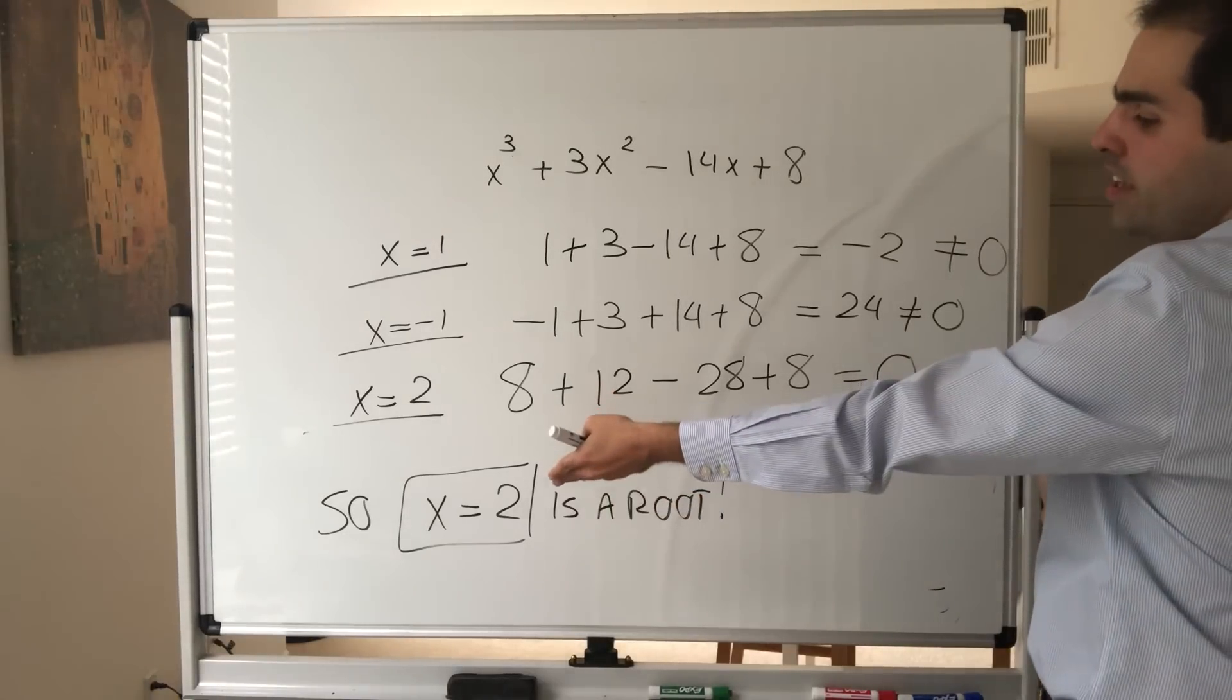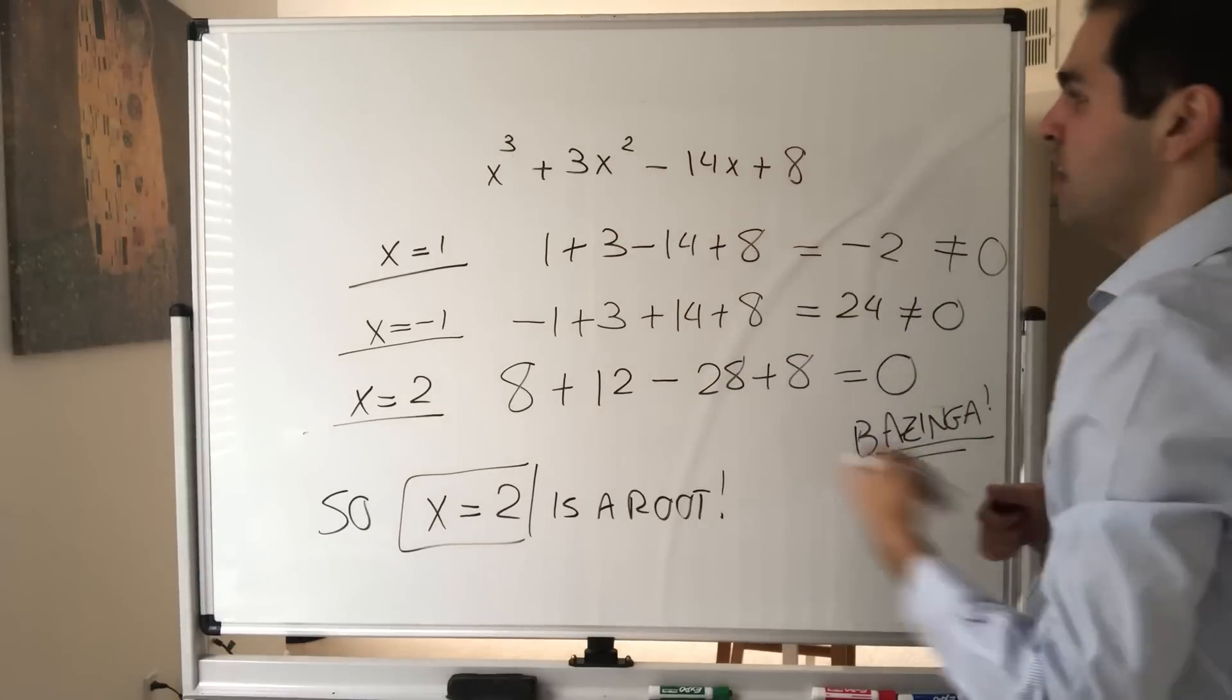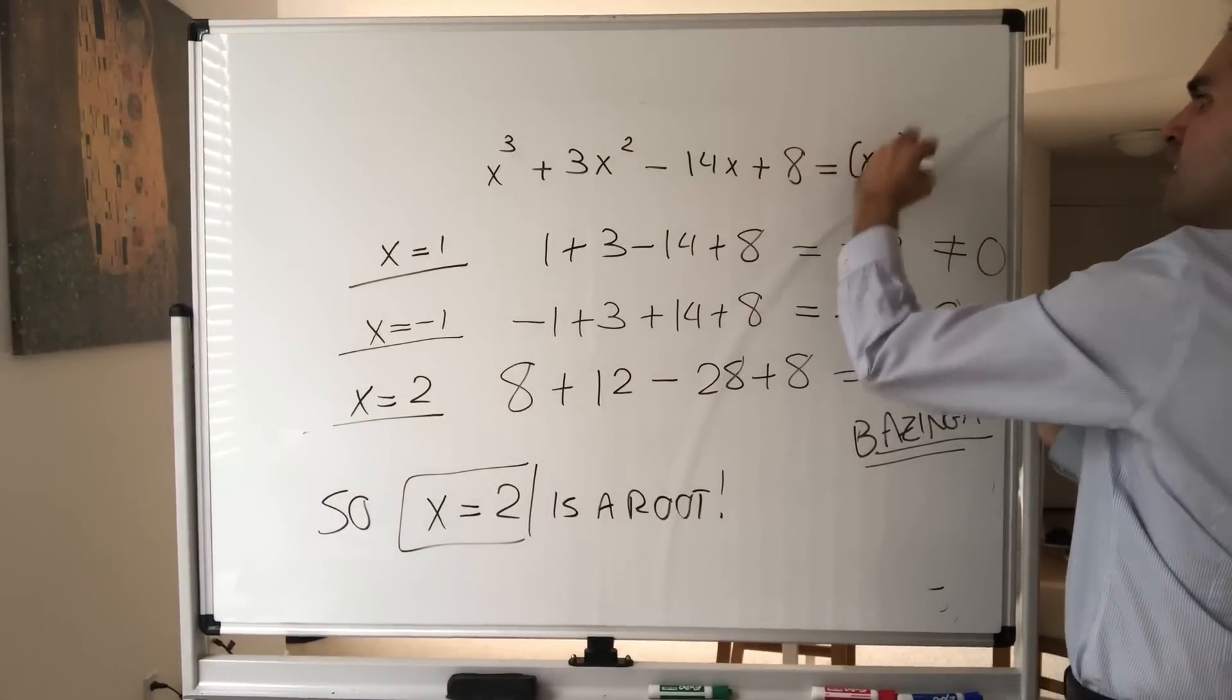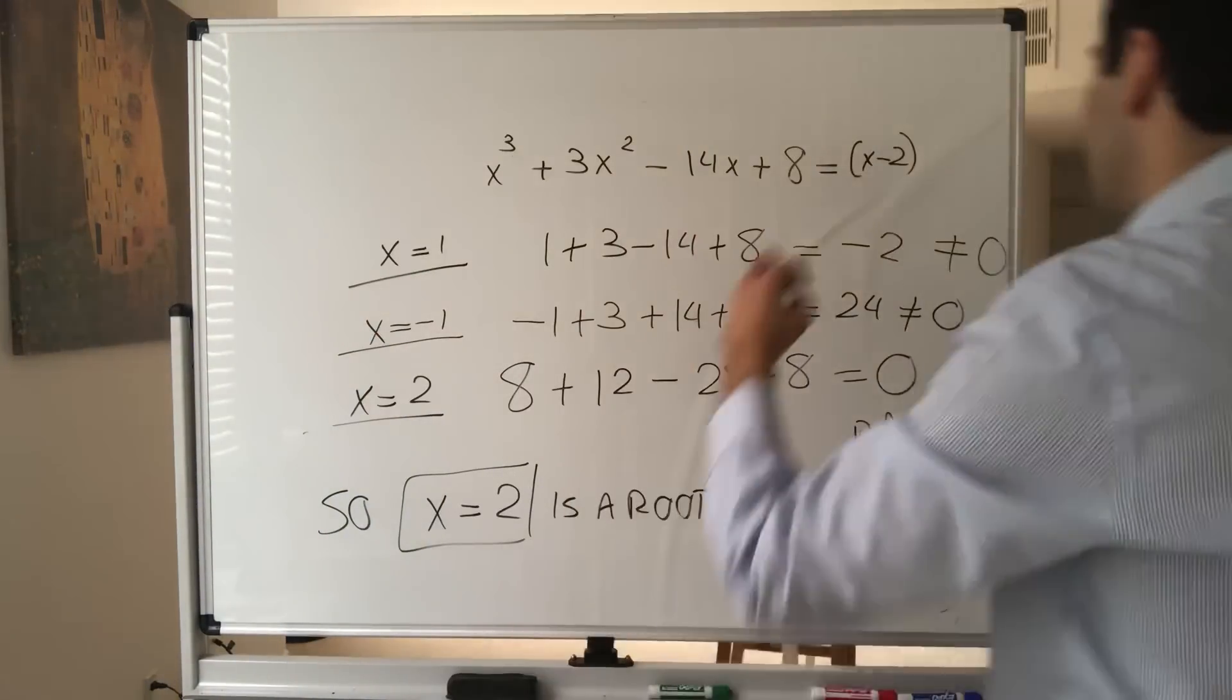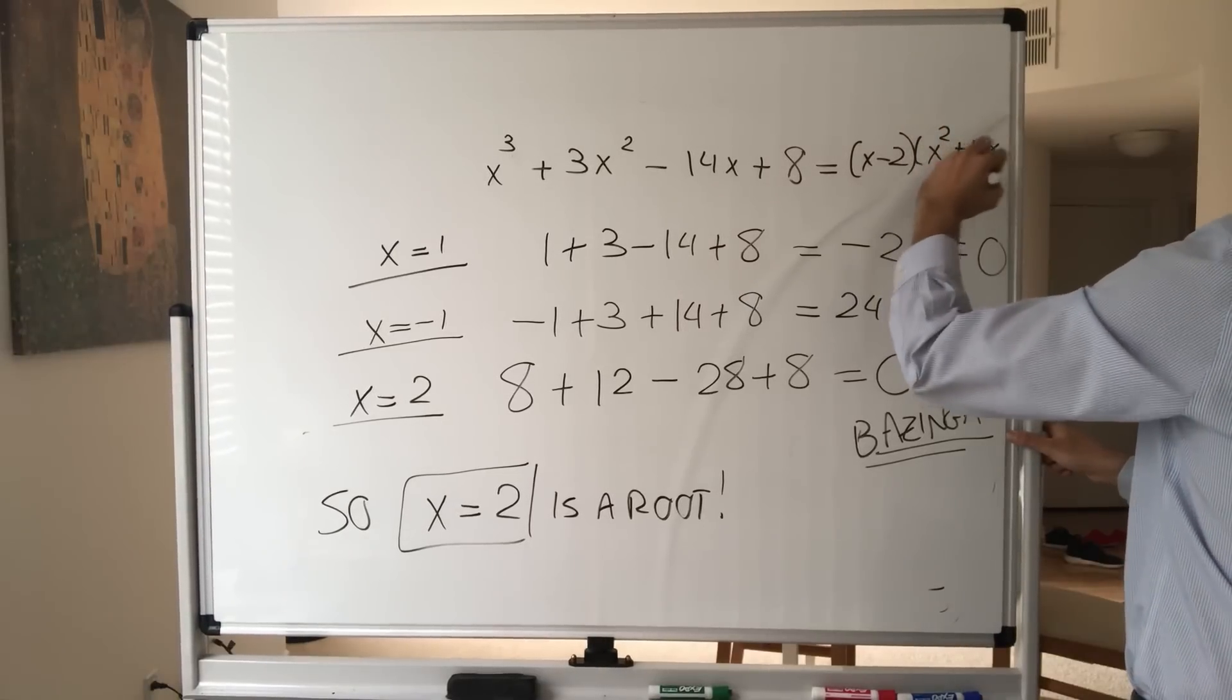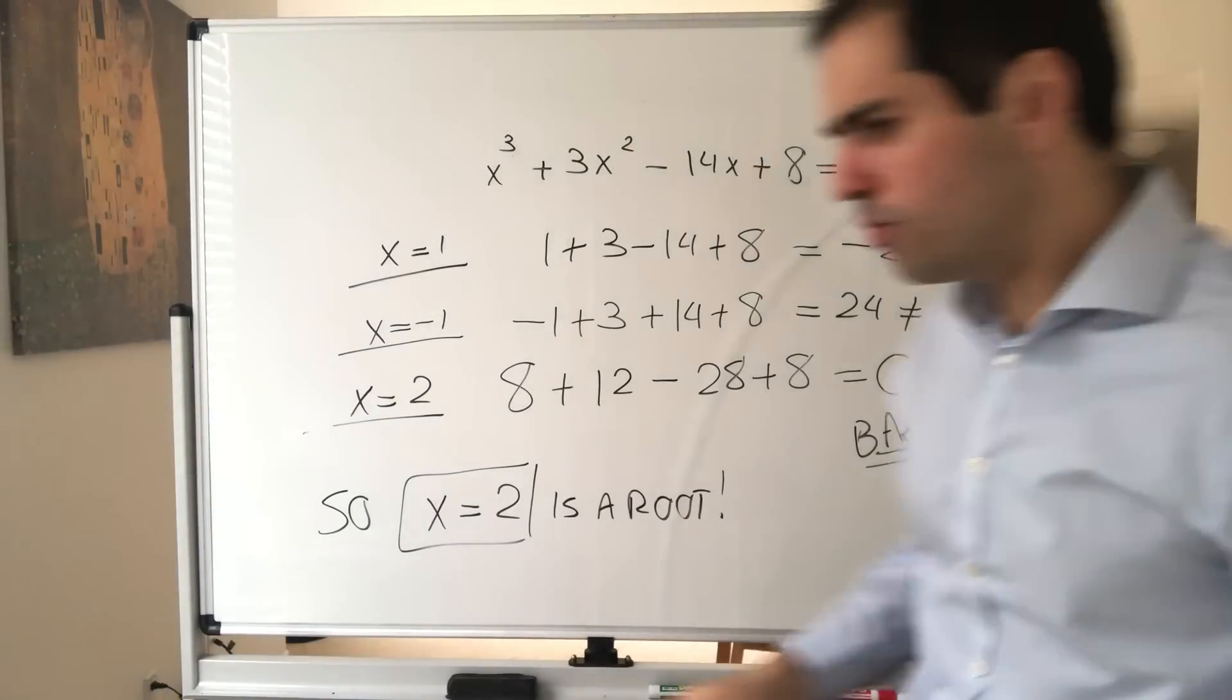And the cool thing is, once you've found a root, you can actually just use long division to factor out the polynomial. For instance, if you do long division here, I think in the end what you find is x - 2 times x² + 5x - 4. And then you can use the quadratic formula to find other roots of the polynomial.